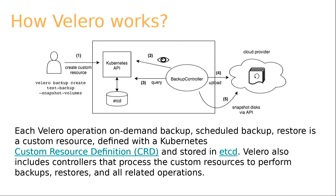If everything is fine, your custom resource is created. The backup controller runs a watcher, and if it finds any new backup object is created, it queries the Kubernetes API server for the state of the resources you requested to be backed up. When the whole backup is complete, it creates a tarball and uploads it to the cloud provider — the same one you mentioned in your backup and snapshot location. You can have different backup and snapshot locations if desired, but it's preferred to put them in the same place.